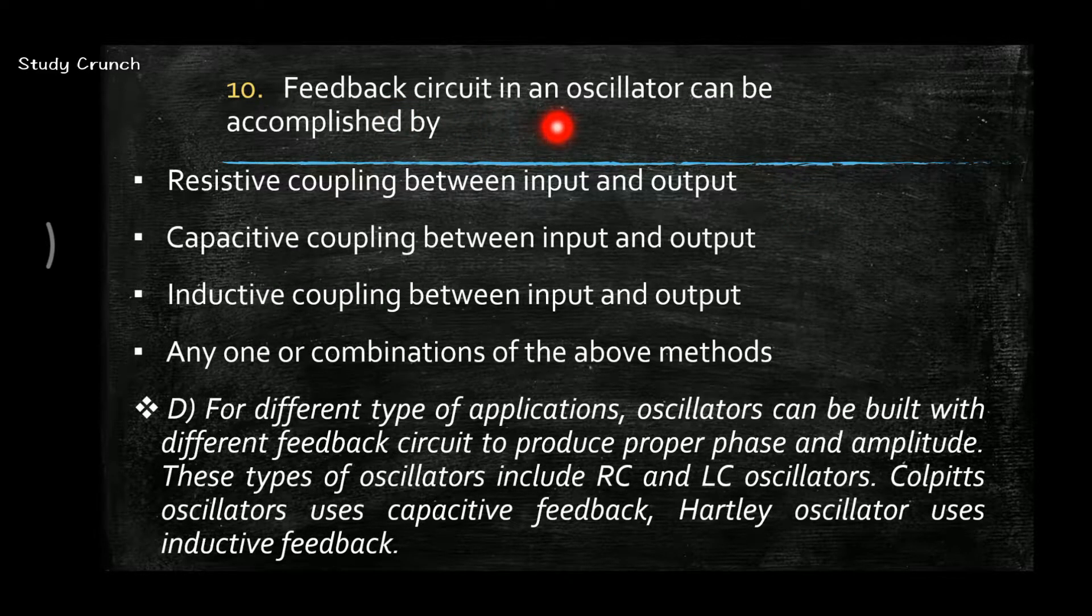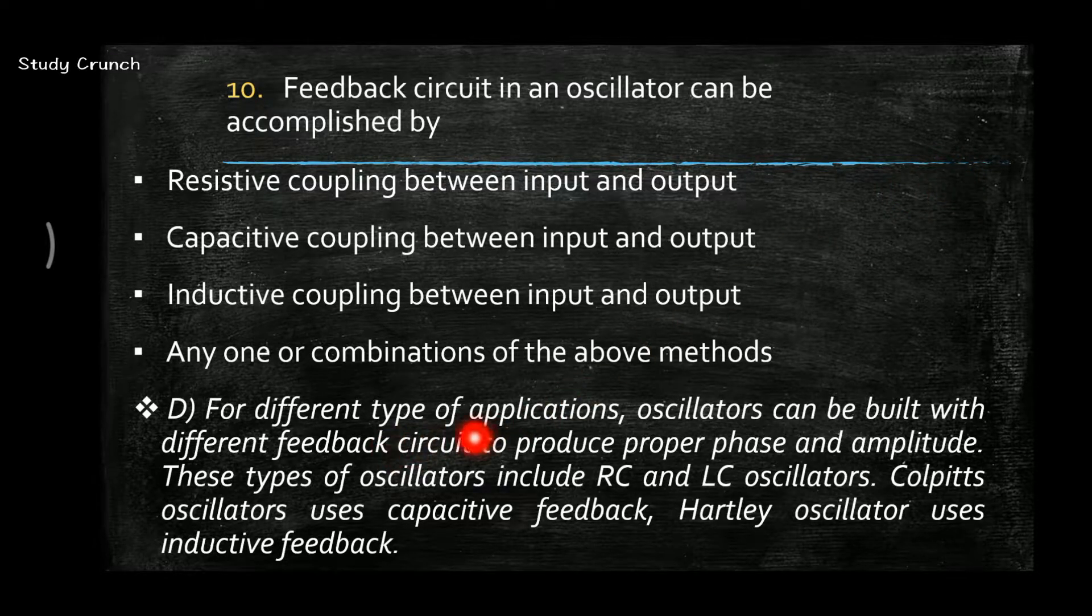Next, feedback circuit in an oscillator can be accomplished by any one or combination of the above methods, i.e. D. We can use resistive coupling between input and output, capacitive coupling, or inductive coupling as well. Oscillators can be built with different feedback circuits to produce proper phase and amplitude. These types of oscillators include RC and LC oscillators.